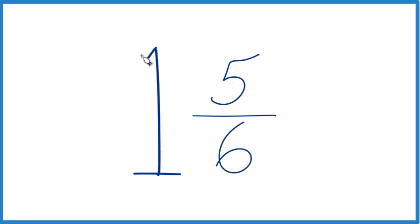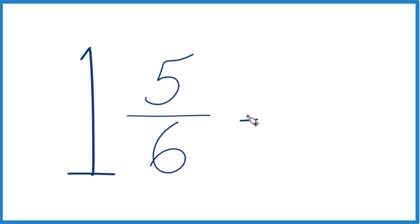So first, take the whole number 1, then multiply it by 6. 1 times 6, that's 6, plus 5. 6 plus 5, that's 11. That becomes the numerator.